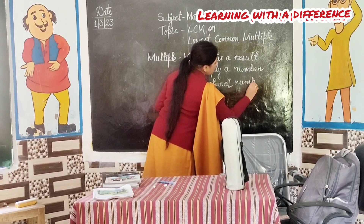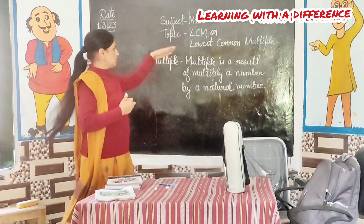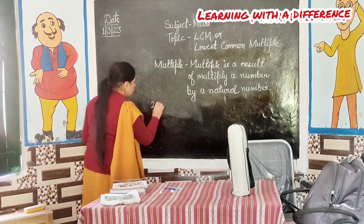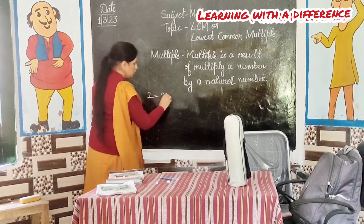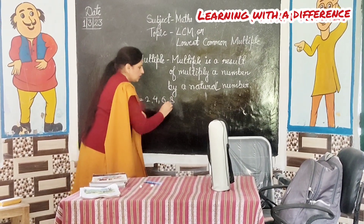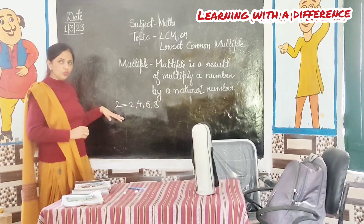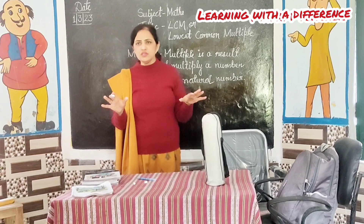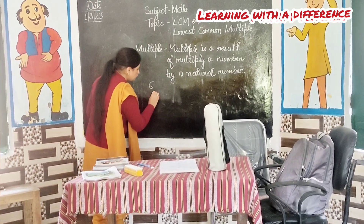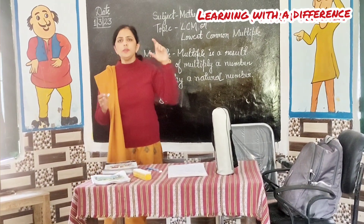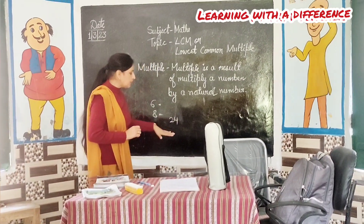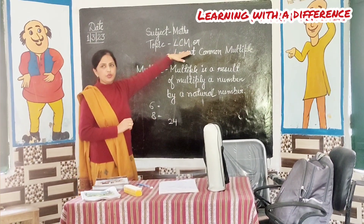Okay, class. For example, if we talk about the multiples of 6 and 8, we came to know the smallest common multiple is 24. And this number is also known as LCM — Lowest Common Multiple. Got it? So, what is LCM? It is the Lowest Common Multiple. You all understood?